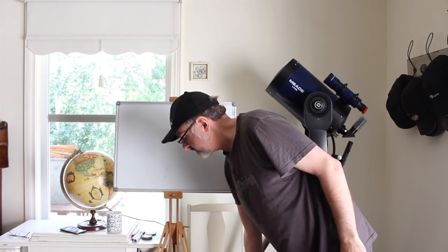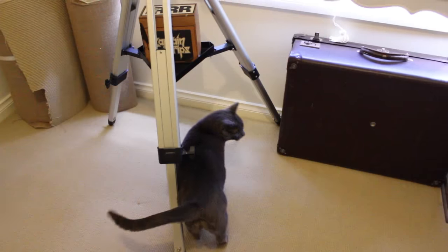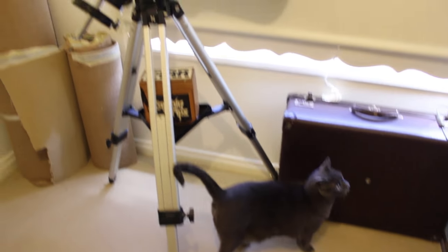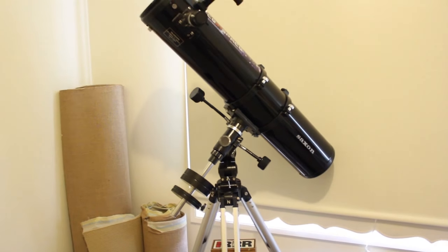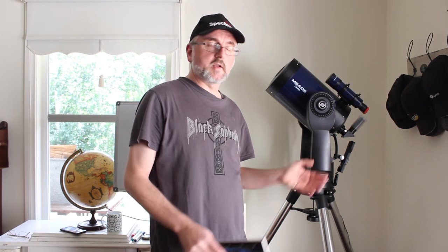Before I bought this telescope I had a manual one. Here's a picture of it. As you can see it doesn't have any electronic bits and pieces on it but it's a pretty good telescope. The difference with this one is that it's electronic. Why would I buy an electronic one?